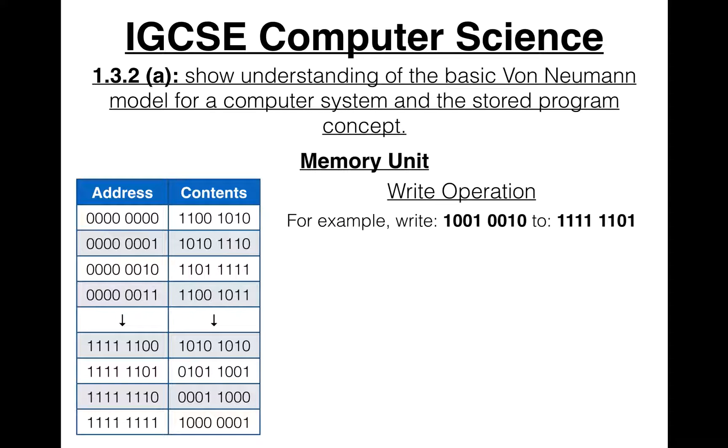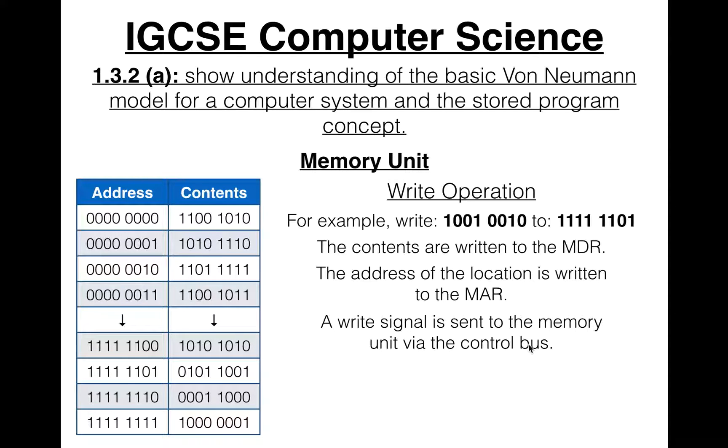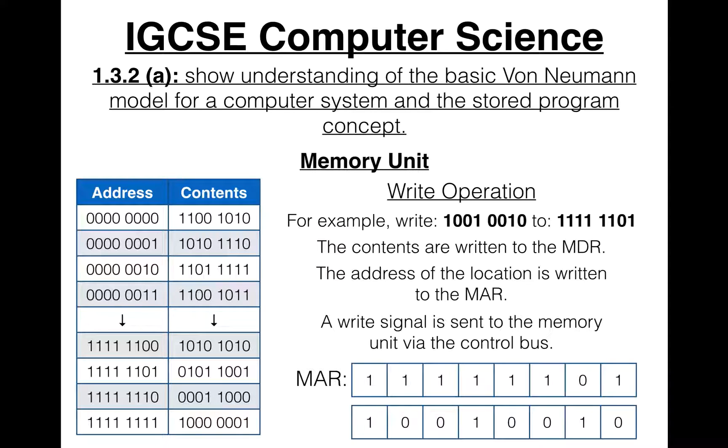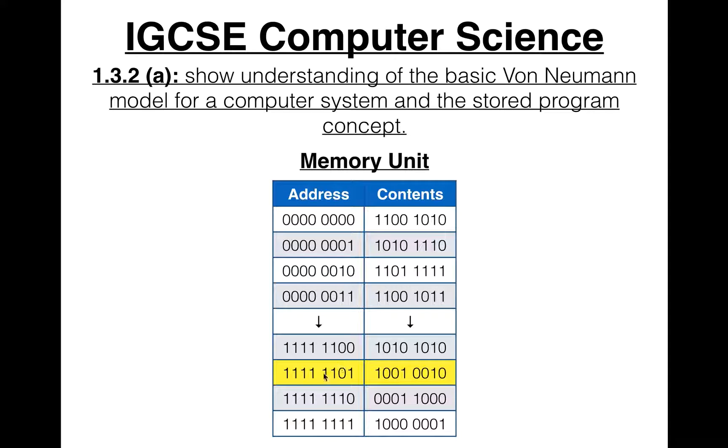Let's look at the write operation. Say we want to write this to location 11111101, which is right here. We want to replace this value with this value. The contents are written to the MDR. The address is written to the MAR. And the write signal is sent to the memory unit via the control bus to make this happen. The MAR would contain the address, and the MDR would contain the data.